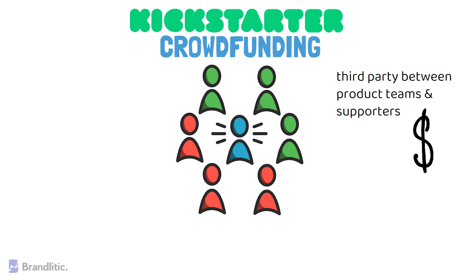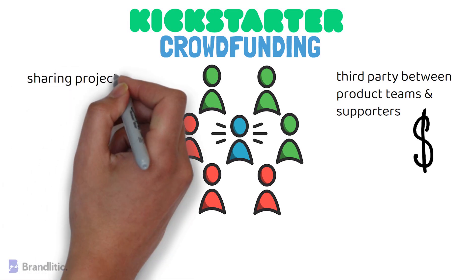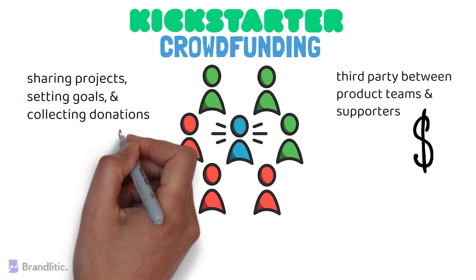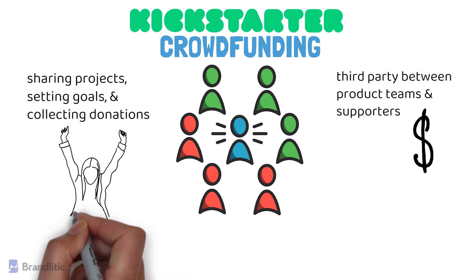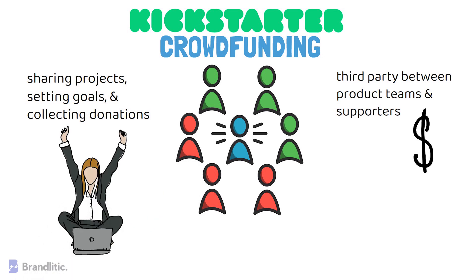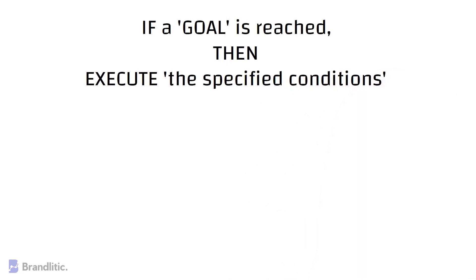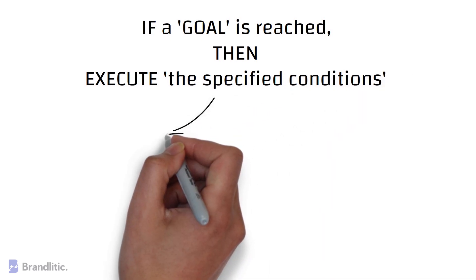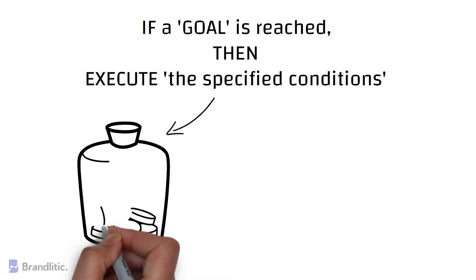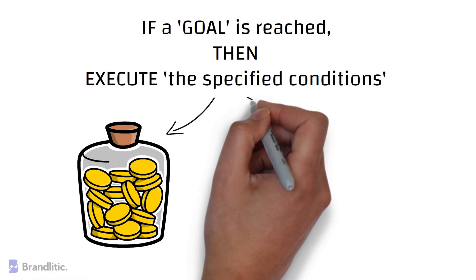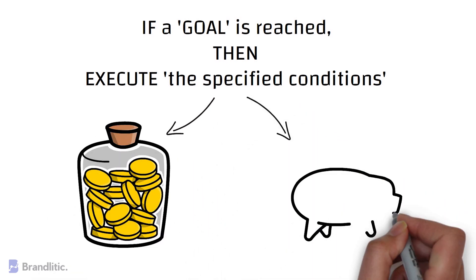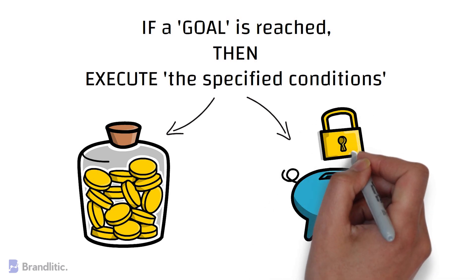Alternatively, a smart contract can actually perform the same crowdfunding functions — sharing projects, setting goals, and collecting donations — but without a third party. We can program a smart contract to execute all these actions while respecting the necessary checks. More precisely, we can program a smart contract to receive funds until a goal is reached. If the project gets fully funded before the deadline, the money raised automatically goes to the product team, but if the project fails, the money automatically goes back to the supporters.